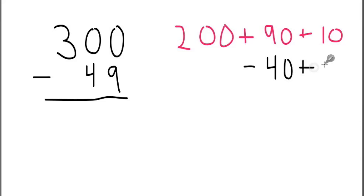Remember that the 4 in 49 is actually a 40 because of its place. After I subtract, I will get a 1, a 50, and a 200.